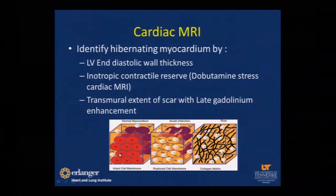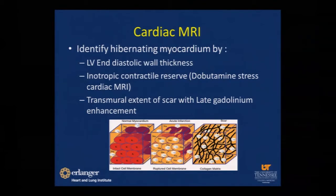In normal myocardium, gadolinium is an extracellular matrix agent. When images are acquired late — usually 10 minutes after initial gadolinium injection — the washout period allows gadolinium to wash out, so normal myocardium appears null. In scar myocardium, cells are replaced by collagen matrix and gadolinium gets trapped within this matrix, taking longer to wash out. This allows us to see the presence of gadolinium in the myocardium at 10 minutes to determine if a segment has scar.